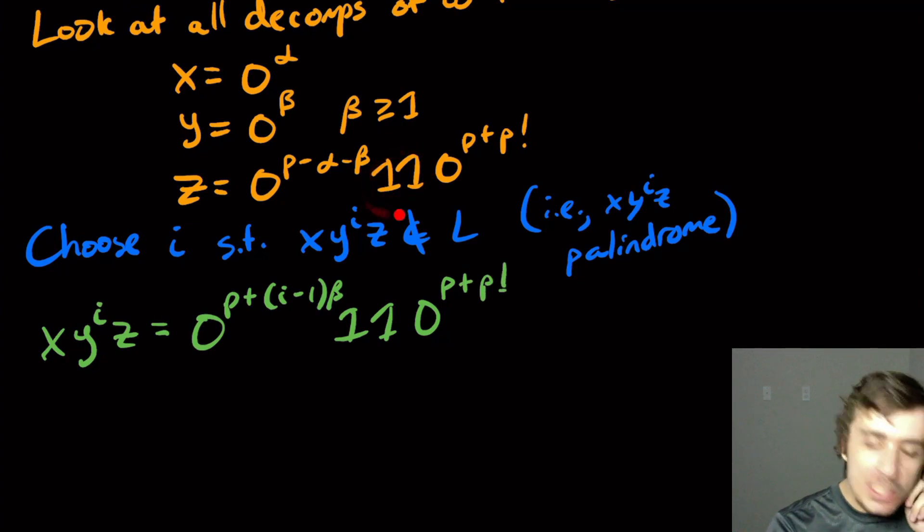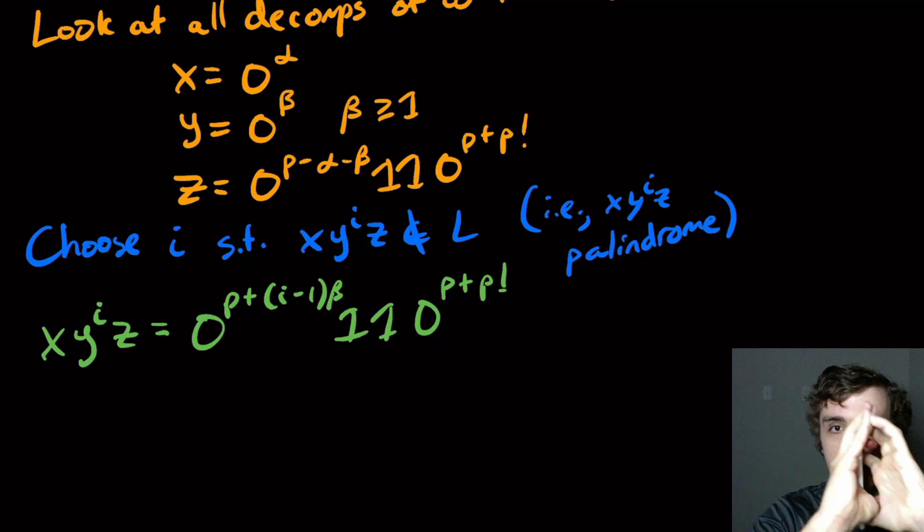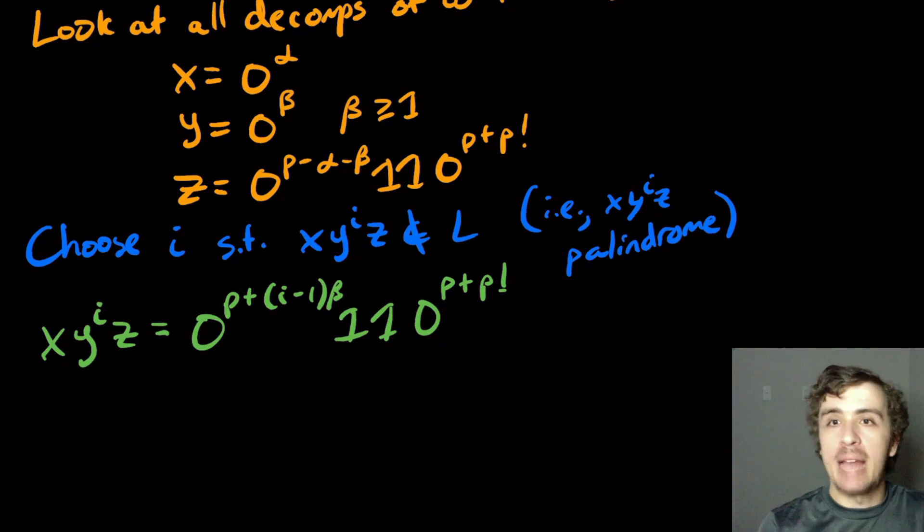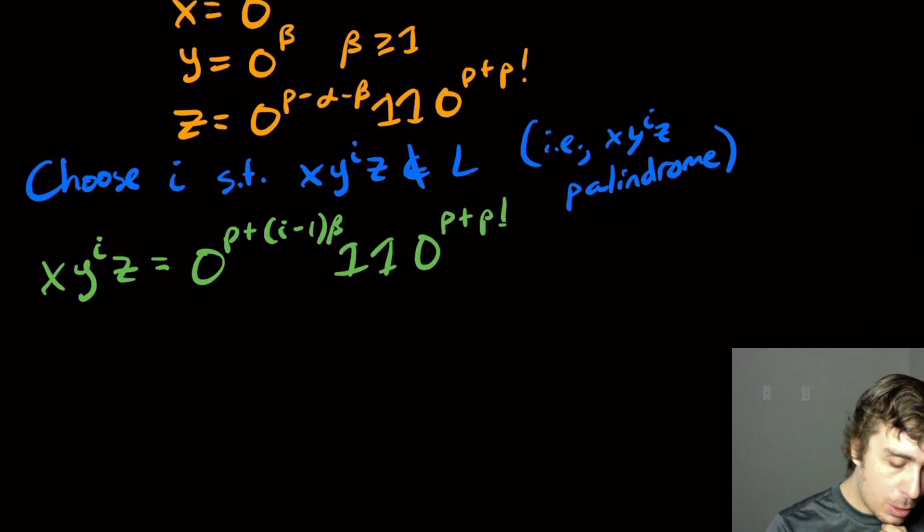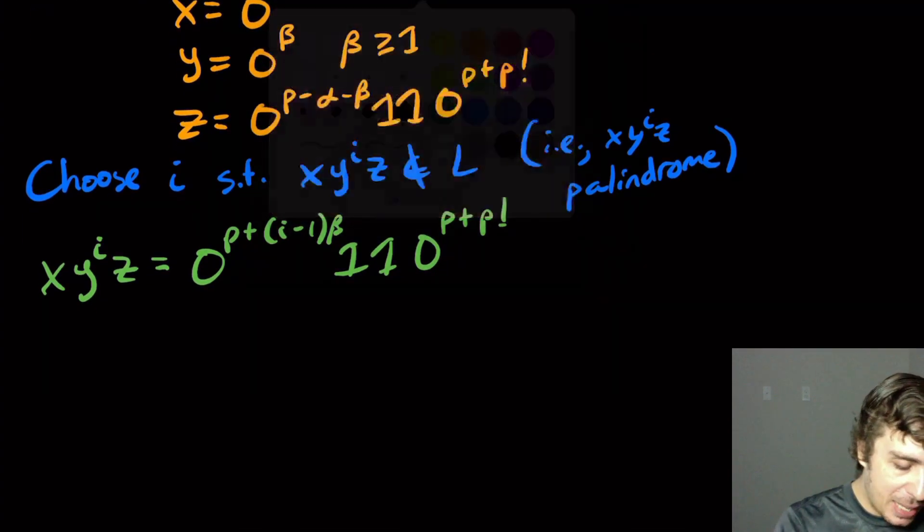The ones in the middle are preventing the zeros from being squeezed together, and that means it already is a palindrome. So the ones are kind of useful. You could have done with a single one instead of two. I just happened to do two here, but okay, so this, what does it mean to be in the language?